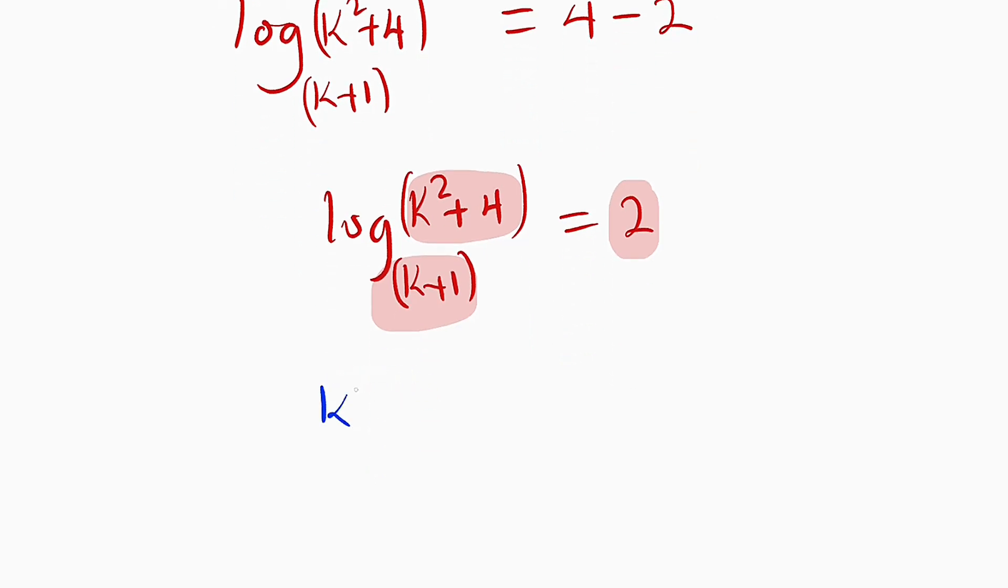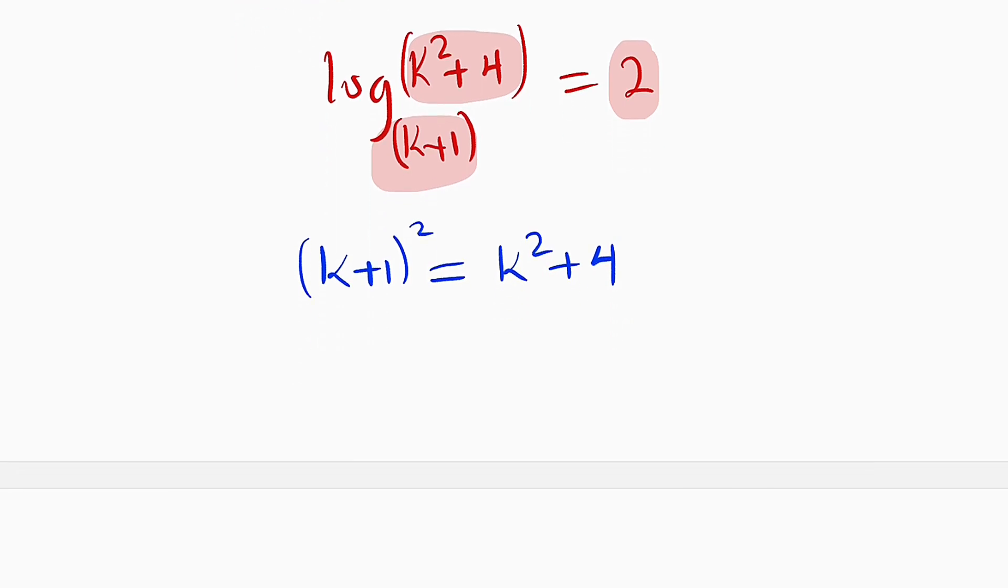So we have k plus 1 all squared equal to k squared plus 4. And we can expand the left hand side. We take the first term and square that. So we have k squared plus we square the second term. 1 squared is 1 plus we have 2 times k times 1 which is equal to 2k. The right hand side, we have k squared plus 4.